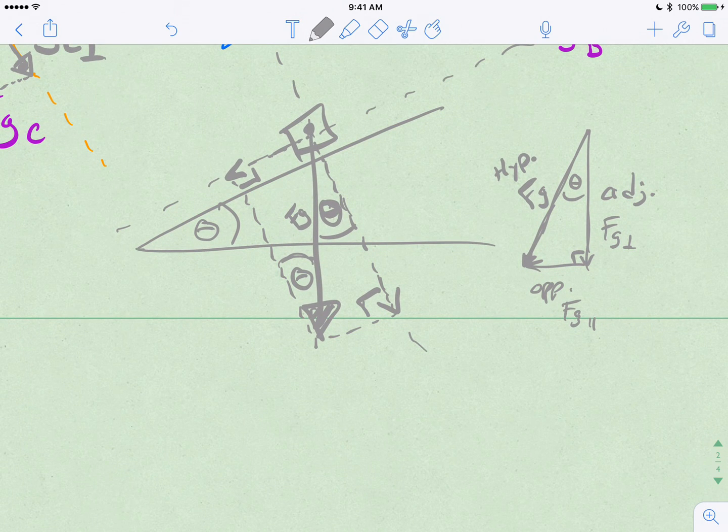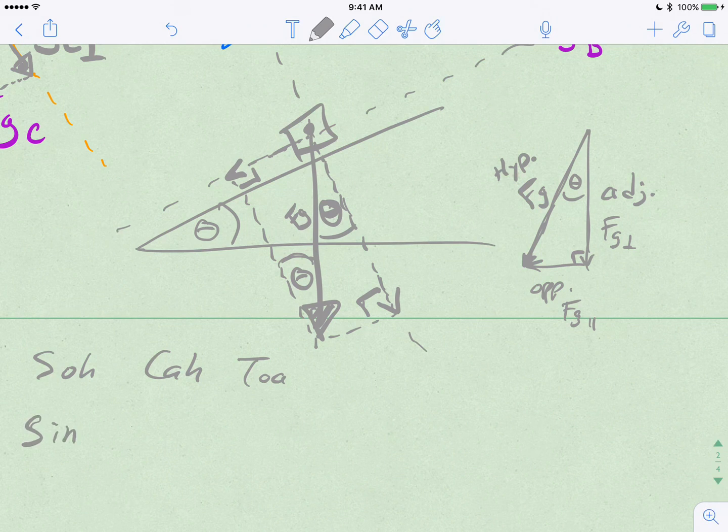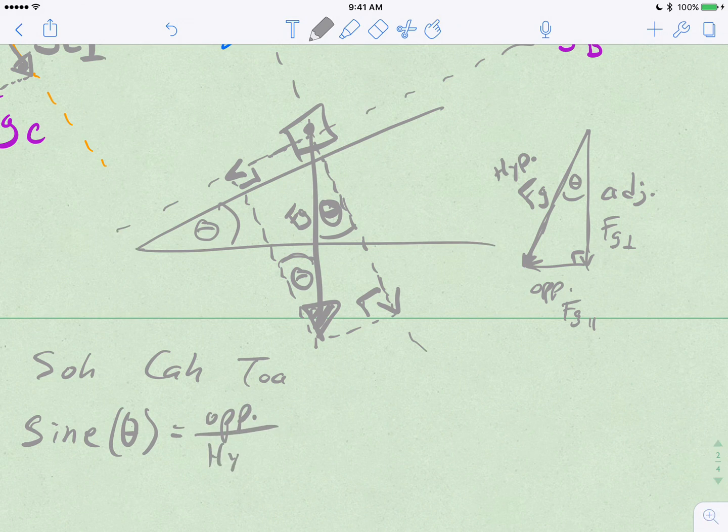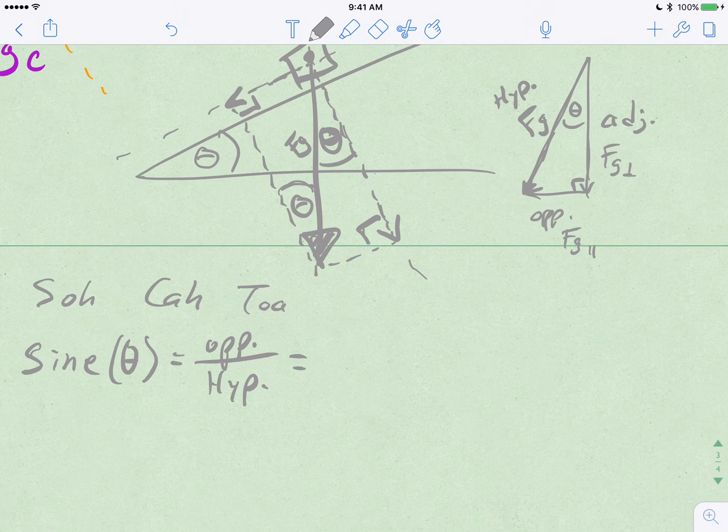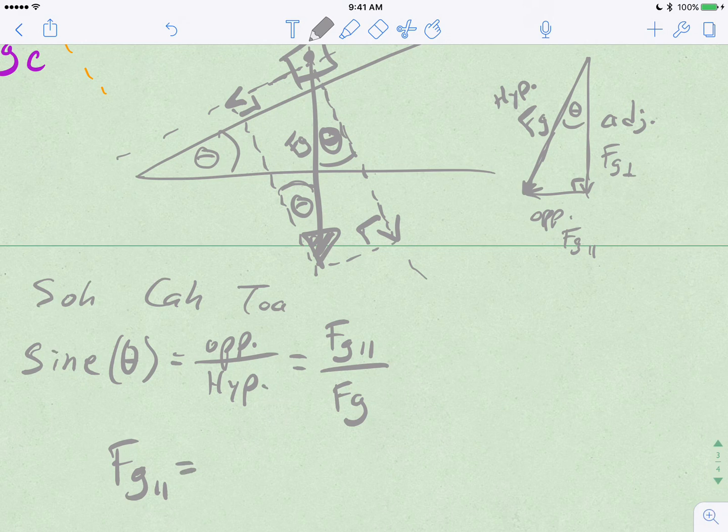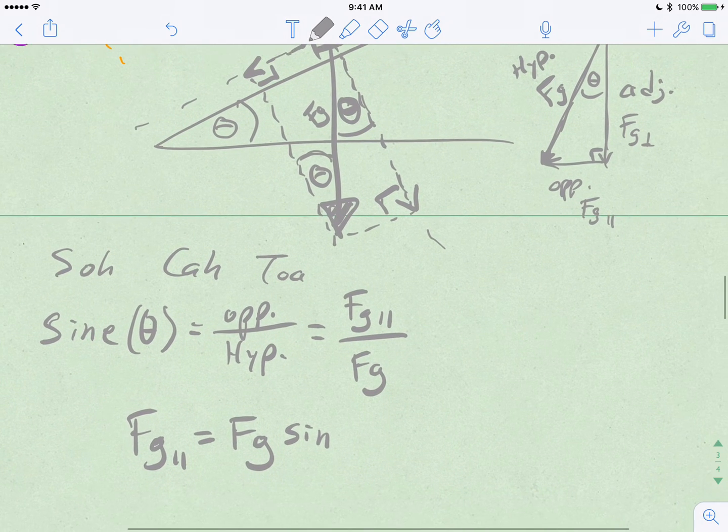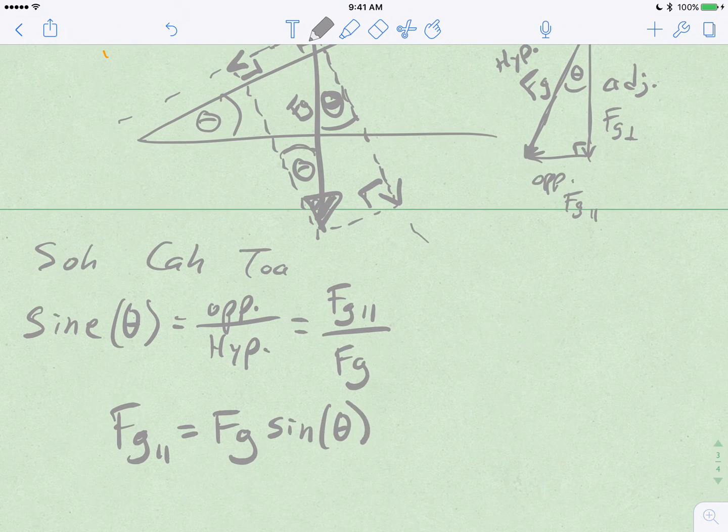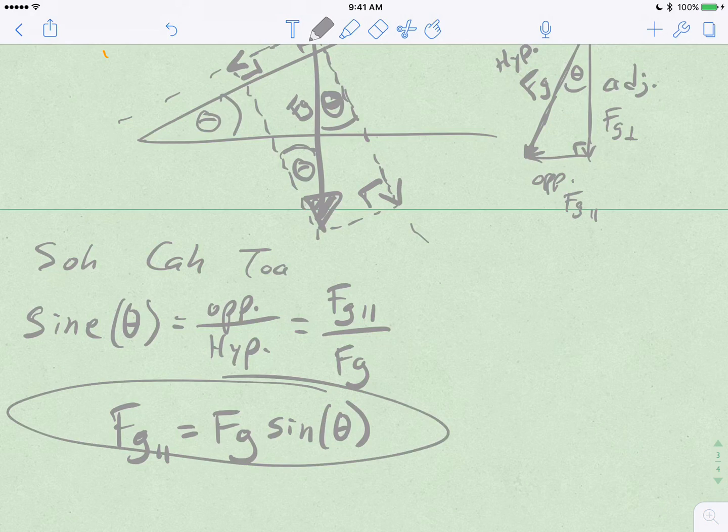If you use your SOH CAH TOA, your sine, cosine, and tangent stuff, then you'll see that sine of theta is equal to the opposite side divided by the hypotenuse. And in this case, that's equal to the parallel component divided by the whole weight. If you rearrange that, you can solve for the parallel component by always multiplying the weight of your object times the sine of theta. And I'm just going to use the abbreviation for sine, which is just sin, S-I-N.